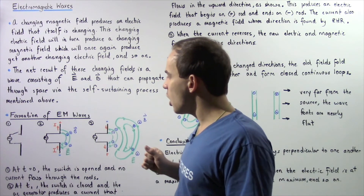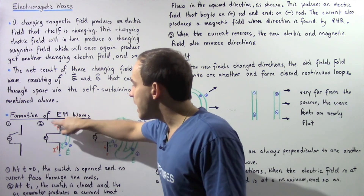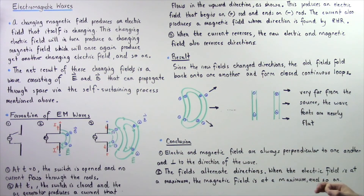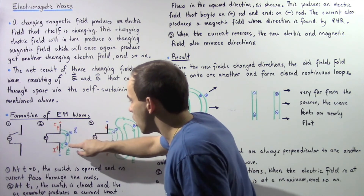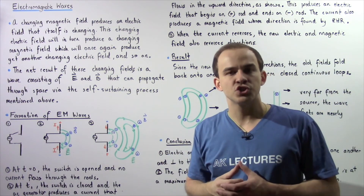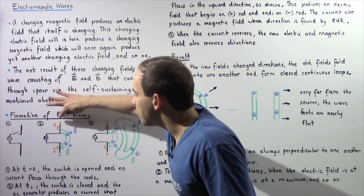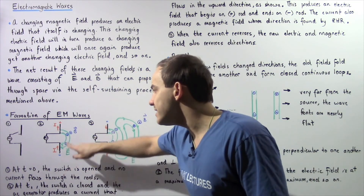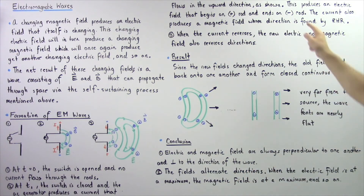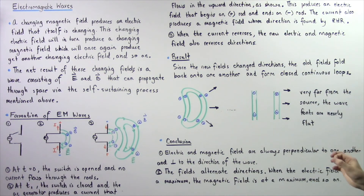When the electric current initially flows upward, the upper rod develops a positive charge and the lower rod develops a negative charge. This separation of electric charge produces an electric field. The electric field lines begin on the positive rod and end on the negative rod, as shown by the green electric field lines.